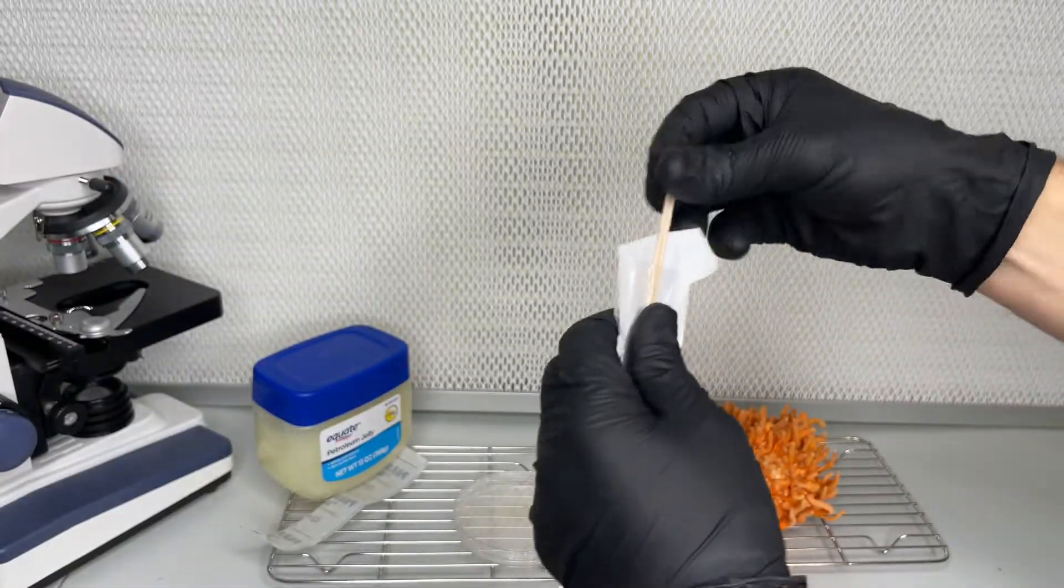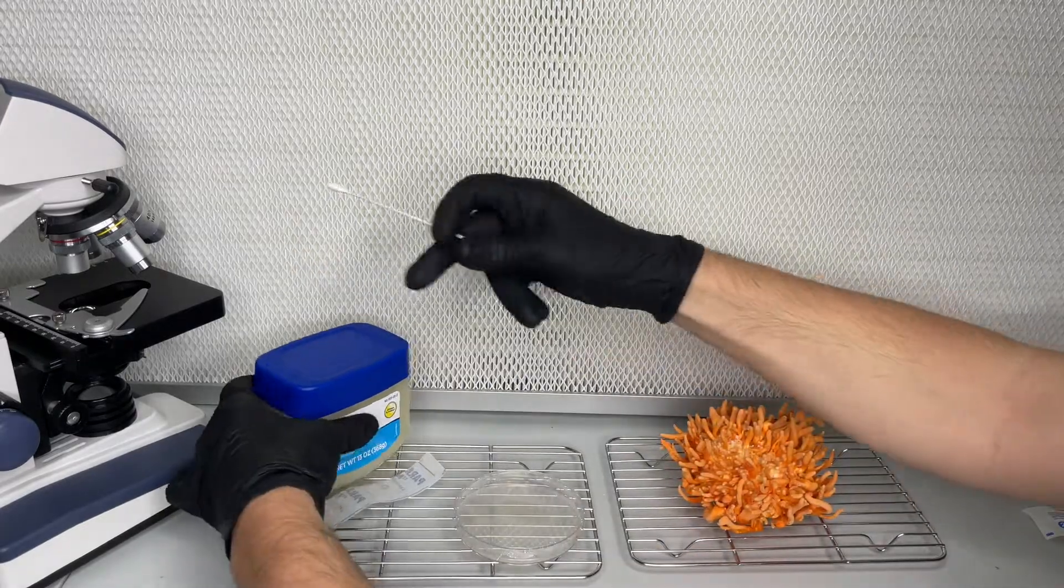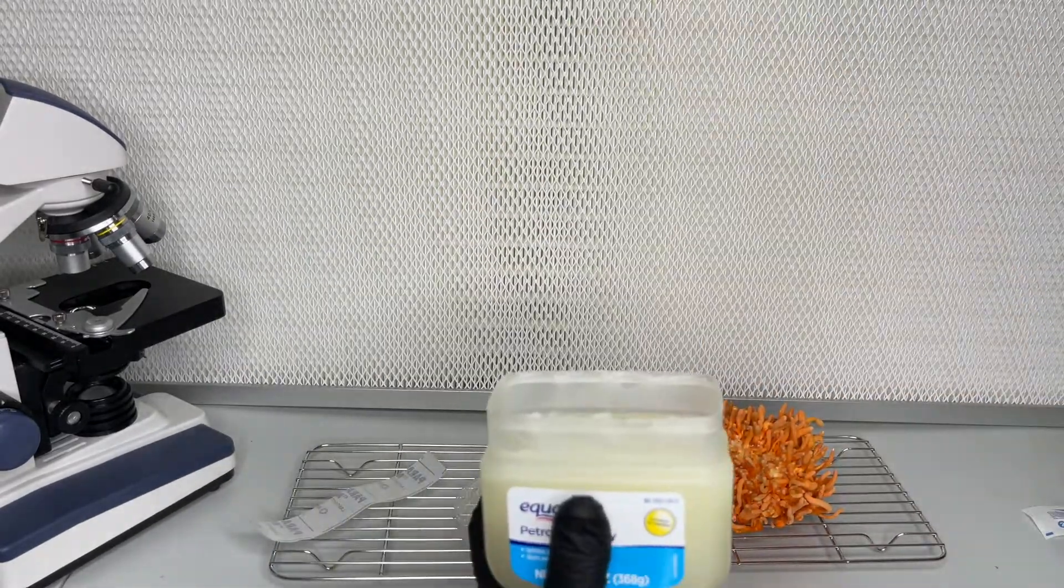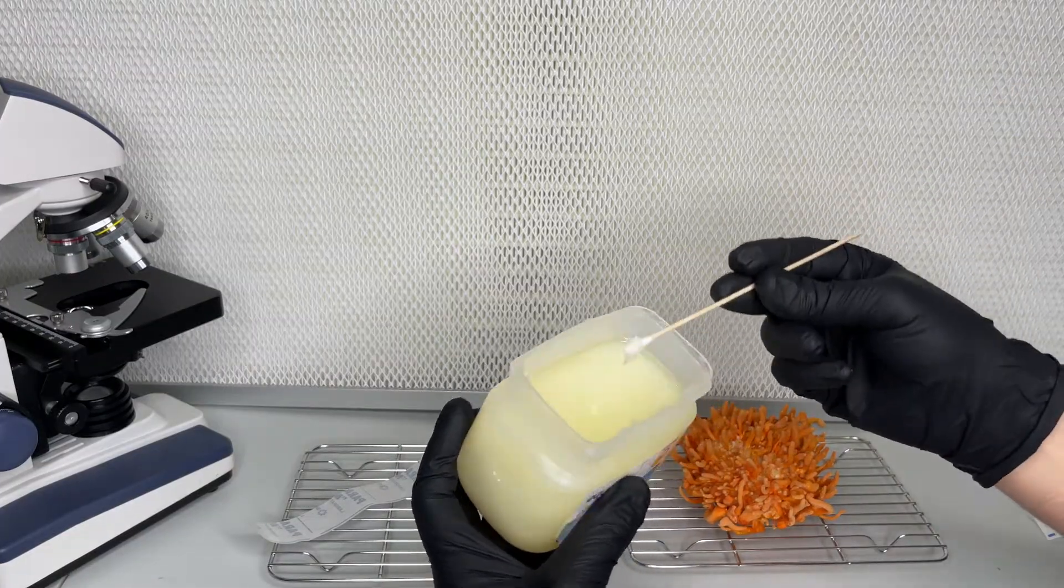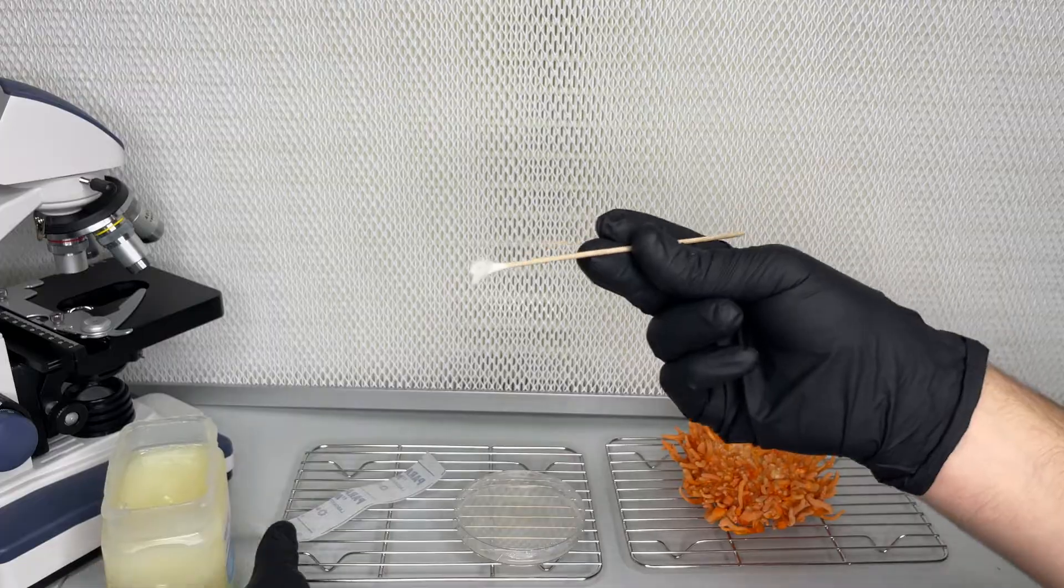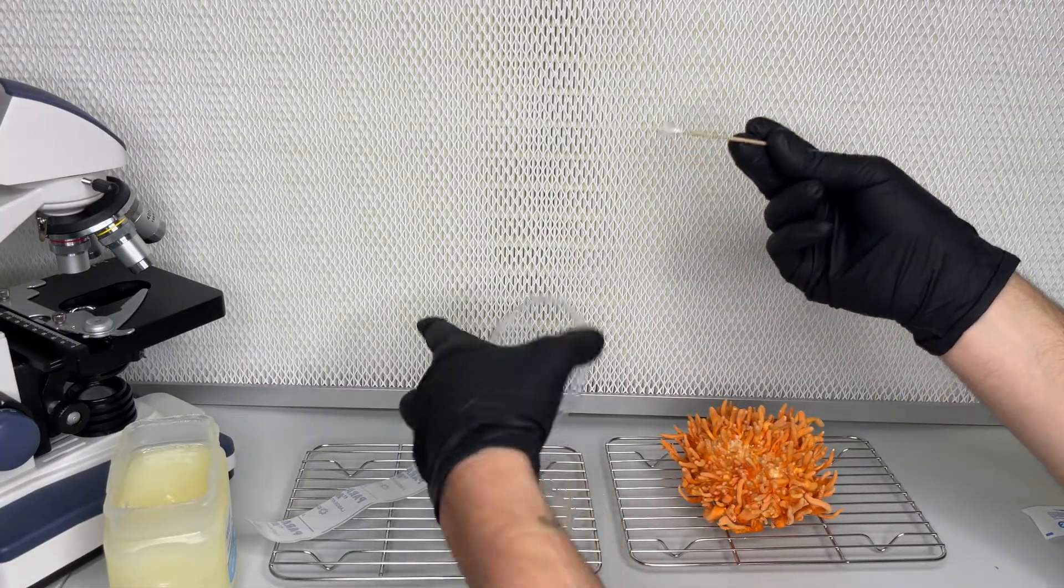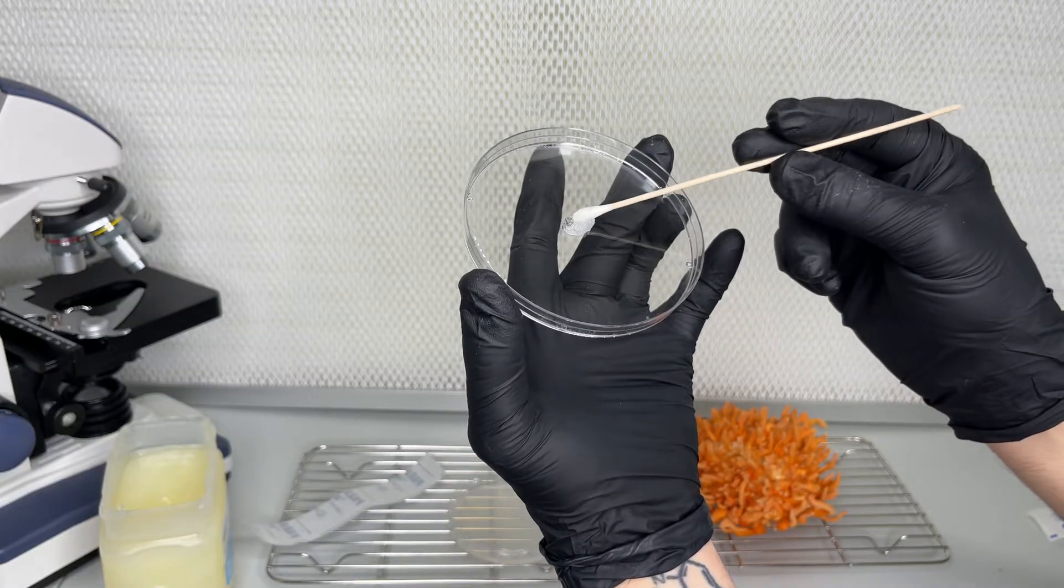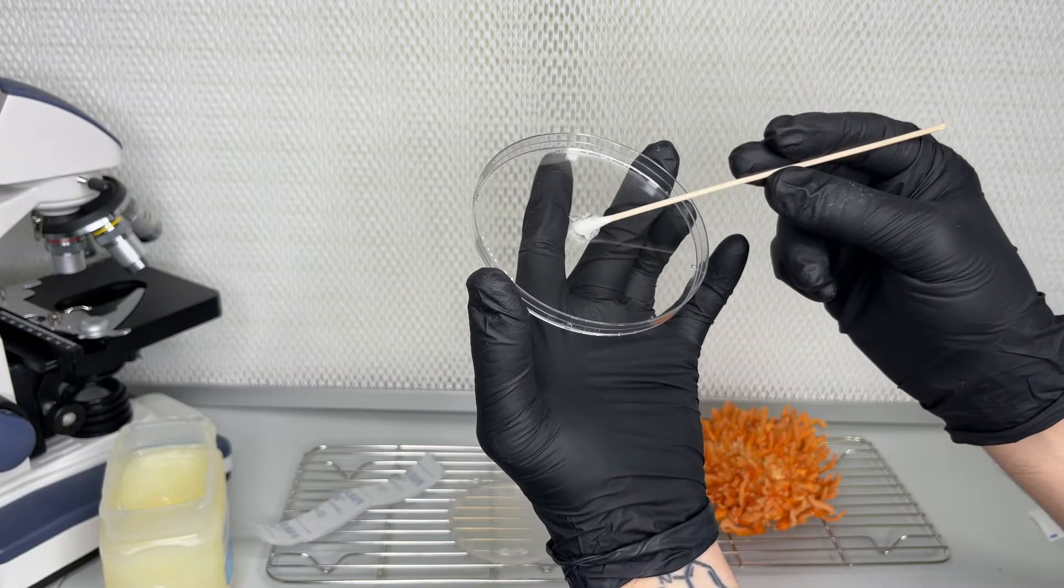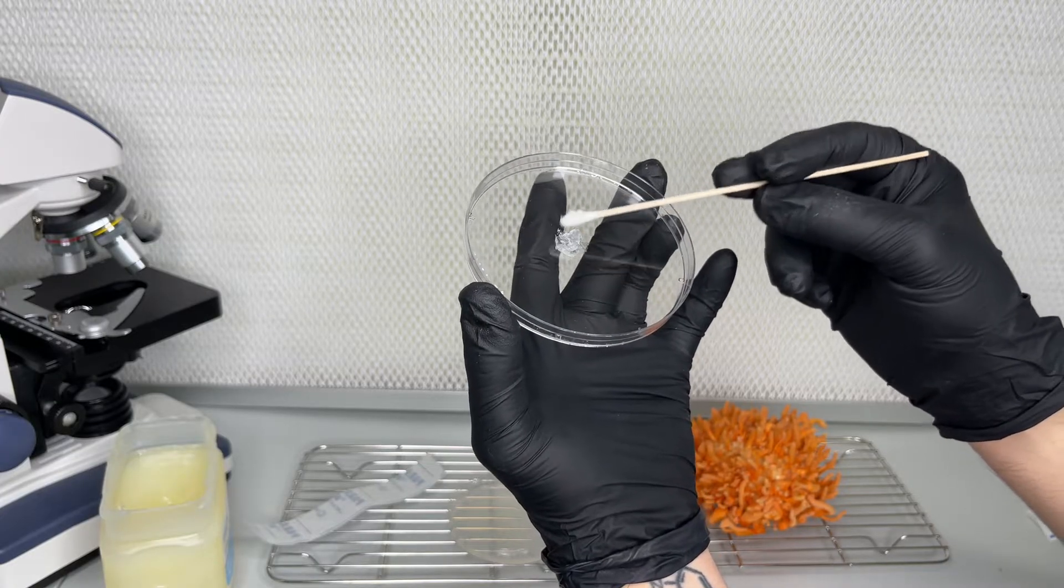I harvest one of the Cordyceps and stick it to the top of a sterilized water agar plate using Vaseline and a cotton swab. The ascospores will discharge onto the water agar plate below within a few days, germinating into monokaryotic mycelium. The monokaryotic mycelium from nearby ascospores fuse together forming dikaryotic mycelium, which is capable of fruiting.